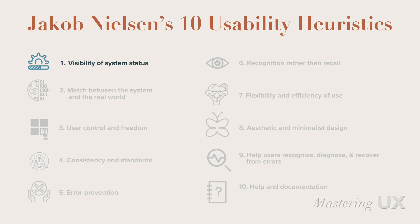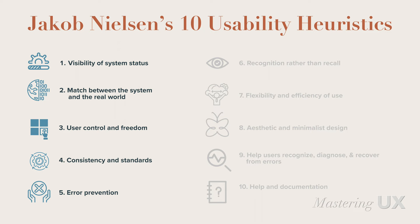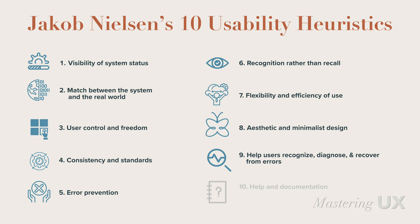Number one, there's the visibility of the system status. Number two, there's a match between the system and real world. Number three, there's user control and freedom. Number four, there's consistency and standards. Number five, there's error prevention. Number six, recognition rather than recall. Number seven, flexibility and efficiency of use. Number eight, there's aesthetic and minimalist design. Number nine, help users recognize, diagnose, and recover from errors. And number ten, help documentation.